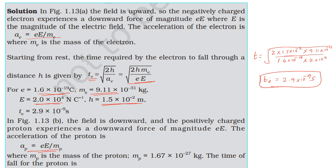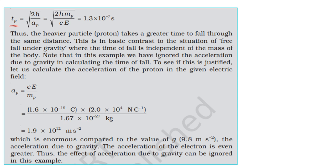For the proton, the acceleration is a = eE/m_p, where the mass of the proton is 1.67×10⁻²⁷ kg. Using the same formula t = √(2h·m_p / eE), we substitute: h = 1.5×10⁻² m, mass of proton = 1.67×10⁻²⁷ kg, charge of proton = 1.6×10⁻¹⁹ C, and electric field = 2×10⁴ N/C.